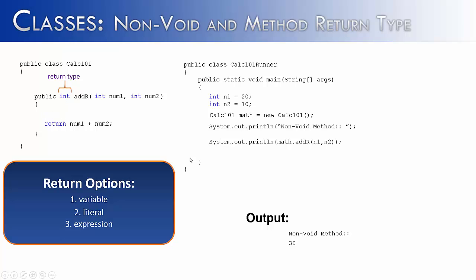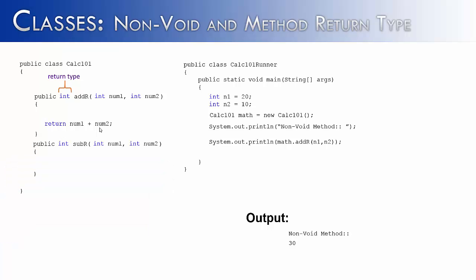A lot of times, all you're going to see in a method is the return statement with a variable, an expression, or a literal. If I wanted to do the same thing with a second method that subtracts instead of adds, I would call the method subR and in the return statement use the expression num1 minus num2. If we were to call that method inside a System.out.println statement, it would give us 10, because 20 minus 10 is 10. That gives us an idea of how non-void methods are written and how the return statement can be utilized.